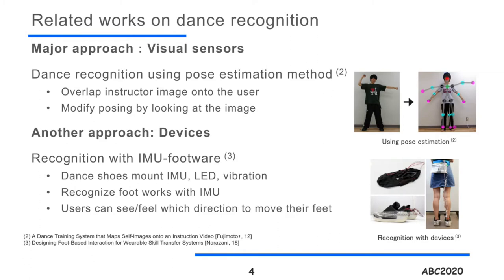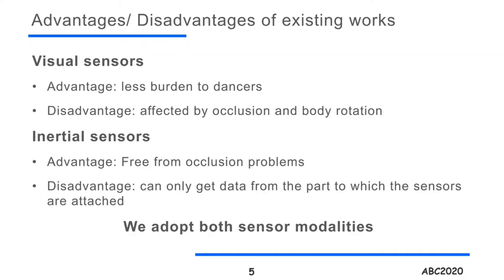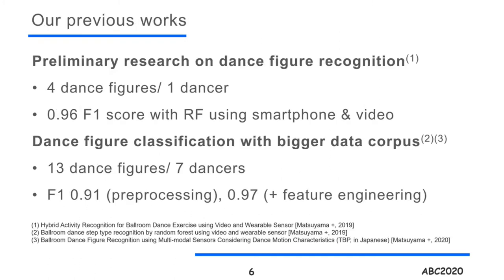There are several works on dance activity recognition. The major approach is to use visual sensors and perform pose estimation. There is another approach using devices such as IMU footwear. Both of those approaches have their advantages and disadvantages, so in this work we mainly used a visual sensor and other wearable sensors to reinforce the recognition model. In our previous works, we have shown a preliminary research on dance figure classification method and classification with bigger data compared to previous work using conventional machine learning methods.